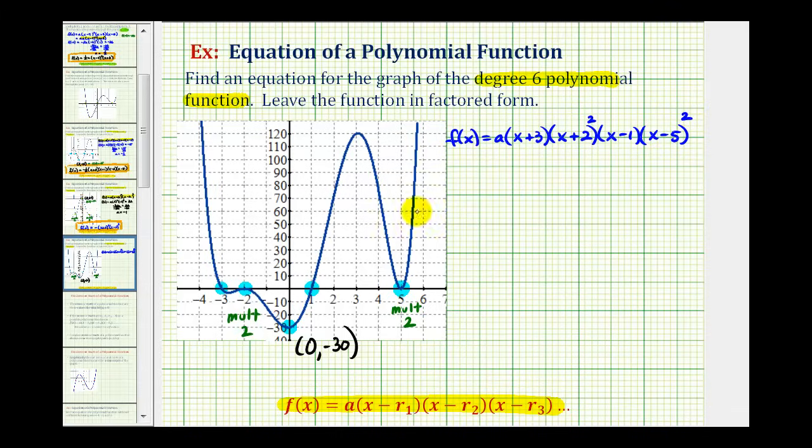Based upon how our graph behaves, these must be factors of our polynomial function. Now because the graph contains the point (0, -30), that means f(0) must equal -30.